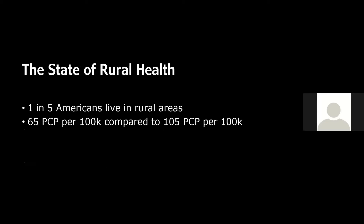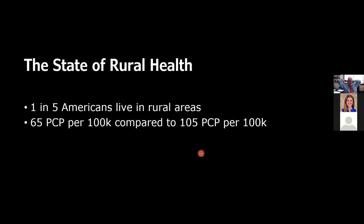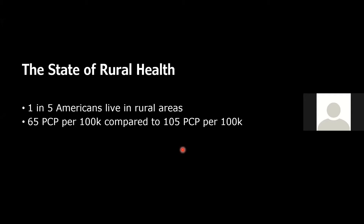So, the state of rural health. About 25 percent — one in five Americans — live in rural areas, and about 90 to 97 percent of America's land mass is considered rural. The distribution of health care is vastly different than in suburban or urban areas. In rural areas there are about 65 primary care docs per 100,000, compared to 105 per 100,000 in suburban and urban areas. When you look at specialists the numbers get even worse. These communities essentially lack physicians, especially specialists, but also primary care physicians — the backbone of preventative health and medicine in general.